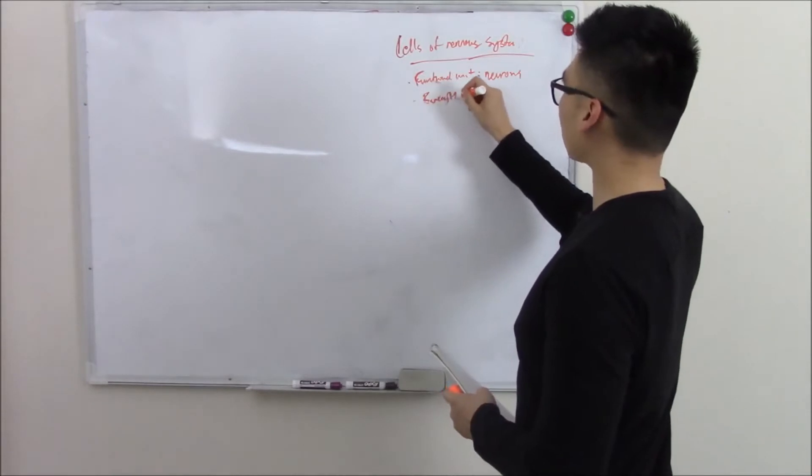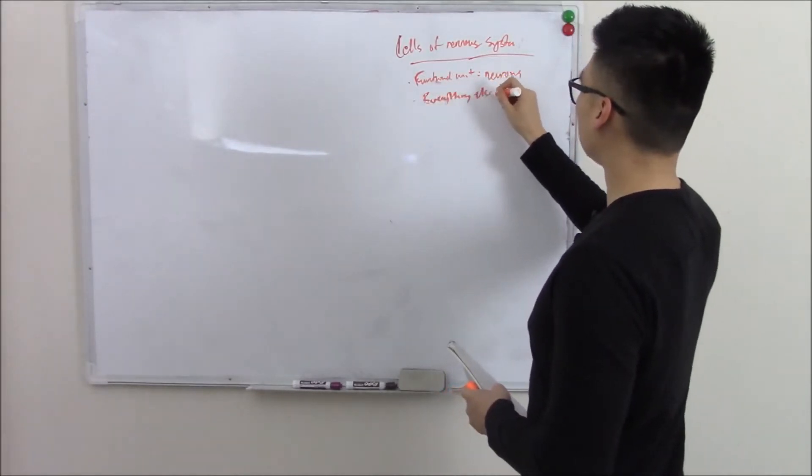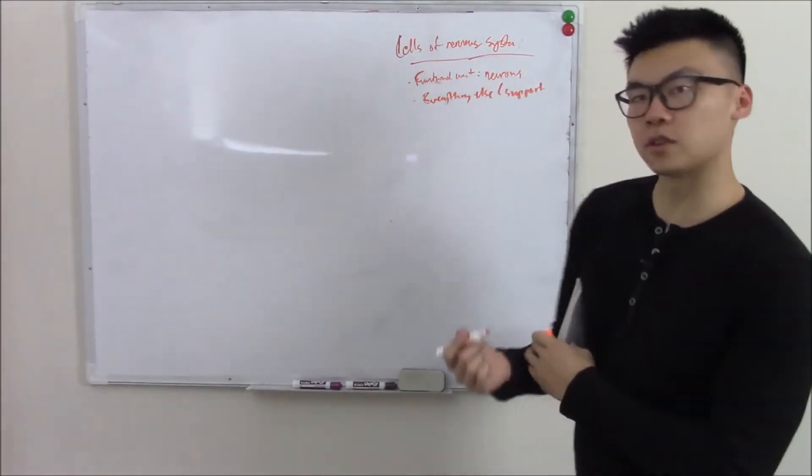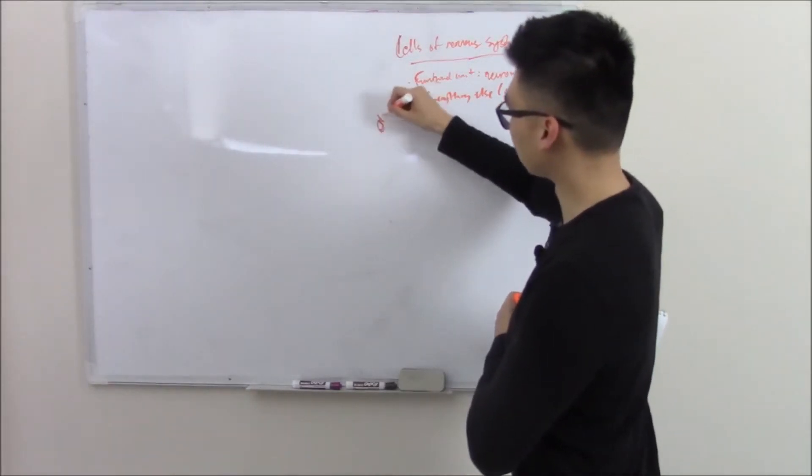Everything else - these are your support cells. And the term for these support cells is glial. These are your glial cells.